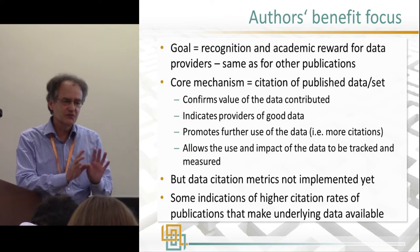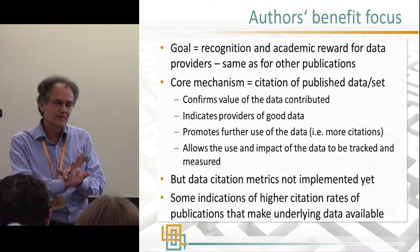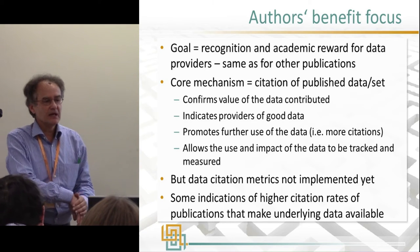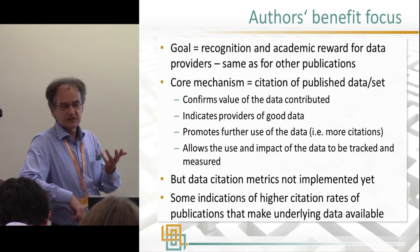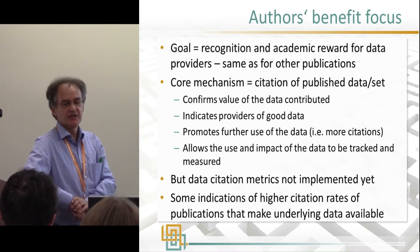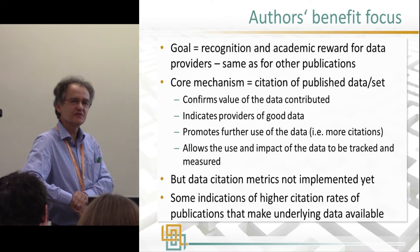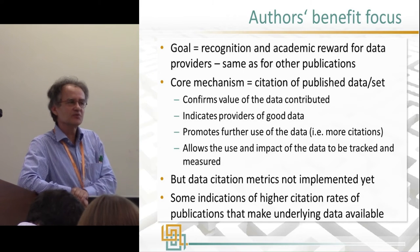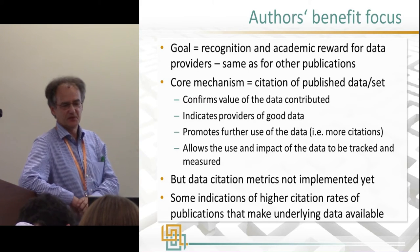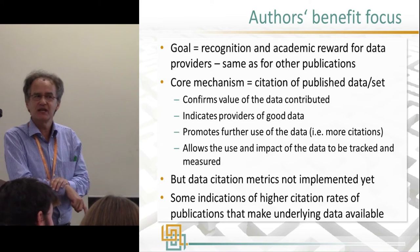If the goal is to get recognition and reward for data sharing, it should be the same as for publications, and the core mechanism is reuse, recognition, and citation of published data. This confirms that the data has value, incentivizes providing good data, promotes further use, and leads to more citations. However, it's currently hardly possible to track reuse or citation of data. There is the DataCite initiative with metadata you can mine, but it's not representative. Impact metrics are also unclear — when you publish a paper you have impact indicators, but that doesn't exist yet for data. There is some indication that a publication linked with data is cited more often.